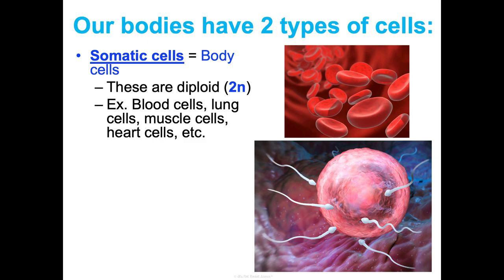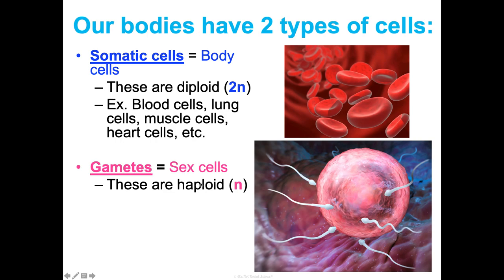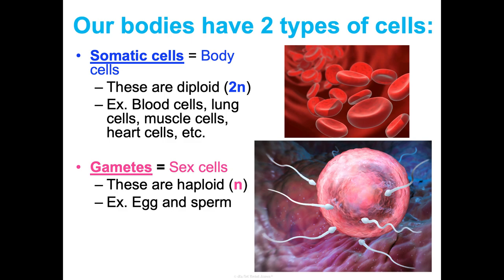The other cells you have are gametes, which are your sex cells. These are haploid, represented just by N. They have half the amount of genetic information as your body cells. These are either eggs if you are female or sperm if you are male. We've already learned about mitosis, which is the process of making body cells, happening all throughout your life as your body grows and repairs. But today we're going to learn how your body makes sex cells — how it specifically makes egg cells versus sperm cells.